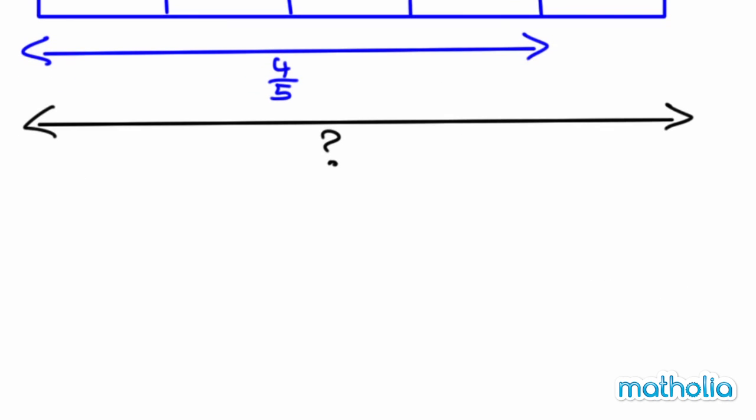So, I know that four-fifths minus half. Now, four-fifths—two and five is a factor of ten. So, multiply by two, multiply by two, and multiply by five, multiply by five. I'll have eight over ten, subtract five over ten, and this gives me three over ten.